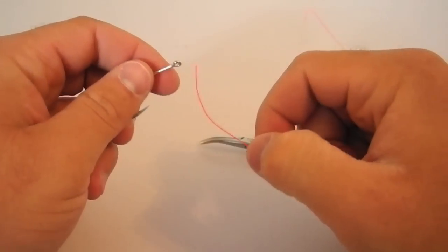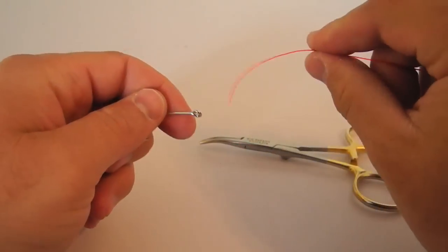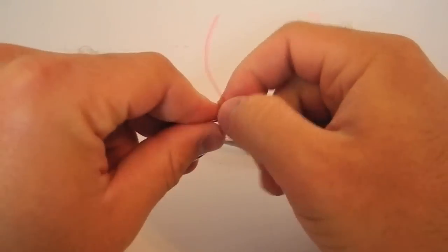What I'm going to do is start by threading the tippet through the hook, and you can go up or down, doesn't matter. Just get that puppy through the eye of the hook.